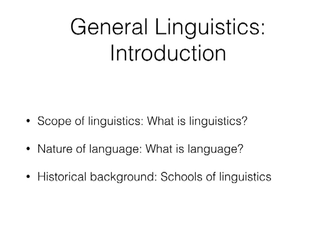When we talk about language, we're going to see what the main characteristics and features of language are. It has features that make it different from other means of communication, because animals do communicate — they have their own language — but human language has interesting features that make it much better and different. Then at the end we'll discuss the historical background and schools of linguistics.